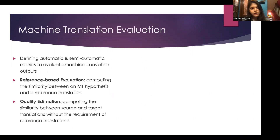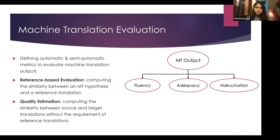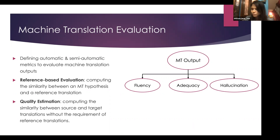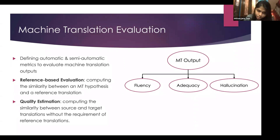Machine translation evaluation uses automatic and semi-automatic metrics to evaluate MT outputs. There are two types: reference-based evaluation, where we have a human-generated translation and want to measure how good the MT output is compared to it, and quality estimation.